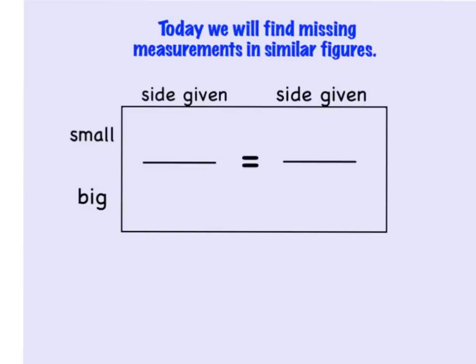So you literally draw a box, and inside the box you're going to set one ratio equal to another ratio. On the outside of the box, on the top part we're going to write small, and on the bottom we'll write big, because there will always be two figures, a small one and a large one.